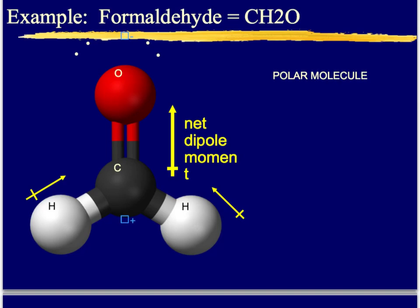Here's another example of a molecule that's polar even though its shape might initially suggest otherwise. Hydrogen only has two electrons, and carbon is much more electronegative, so electrons spend more time around carbon. For both hydrogens, the electrons move towards carbon. Oxygen up here — which we call the electronegative hog — is pulling electrons away from carbon itself. So the electrons spend much more time with oxygen than with carbon. The net dipole moment is in the upward direction, making this a polar molecule.